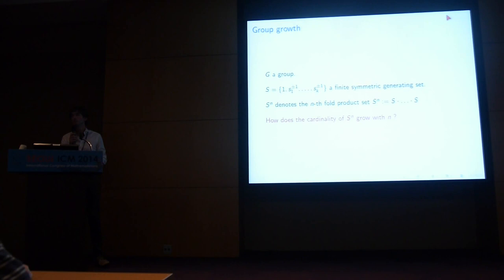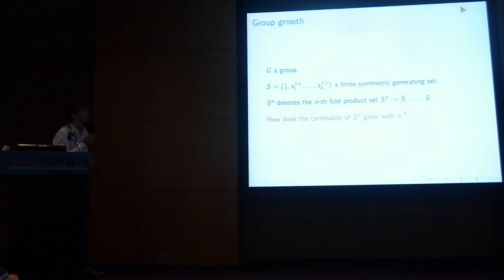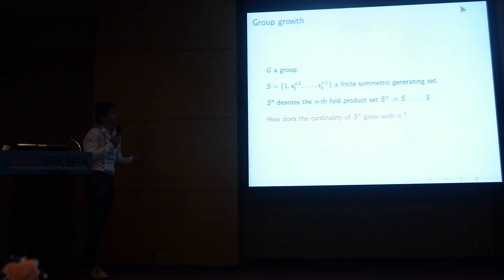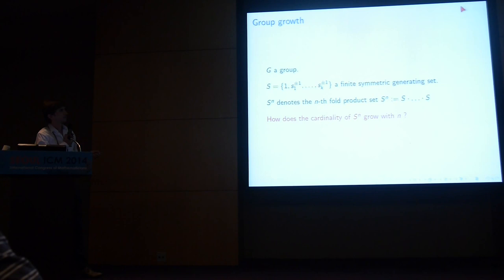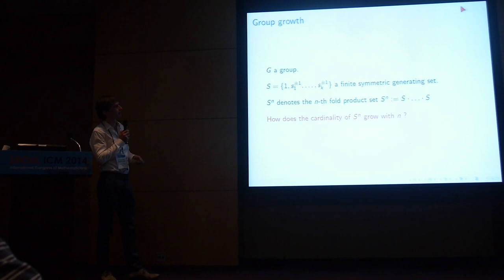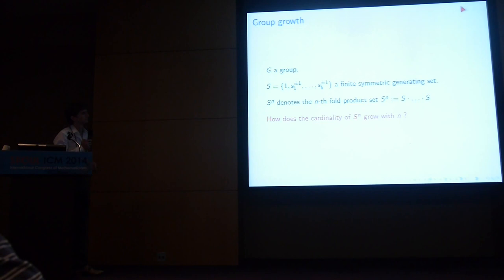So G is a group, and you start with a finite symmetric generating subset S, and you look at the m-fold product set — the set of elements in the group that you can obtain as a product of at most n elements from your generating set. The basic question is: what can we say about this set, and in particular, how large is it?